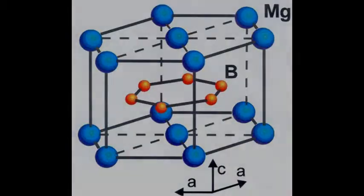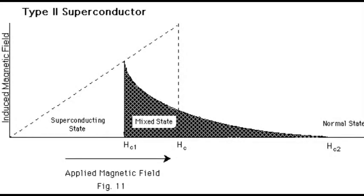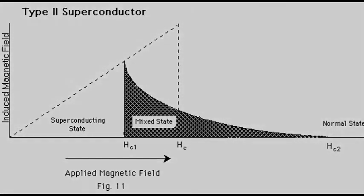Type 2 superconductors are characterized by the formation of magnetic vortices in an applied magnetic field. Type 2 superconductors cannot be explained by BCS theory. Type 2 superconductors have a much higher critical magnetic field. They usually exist in a mixed state of normal and superconducting regions.